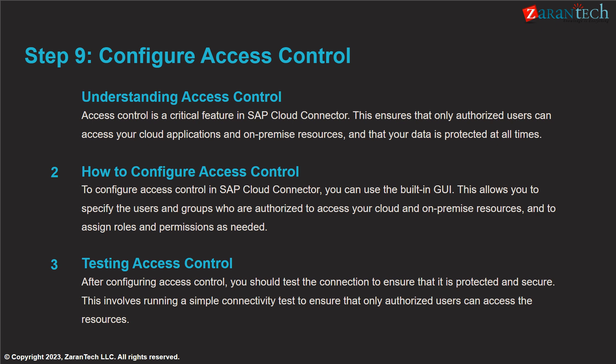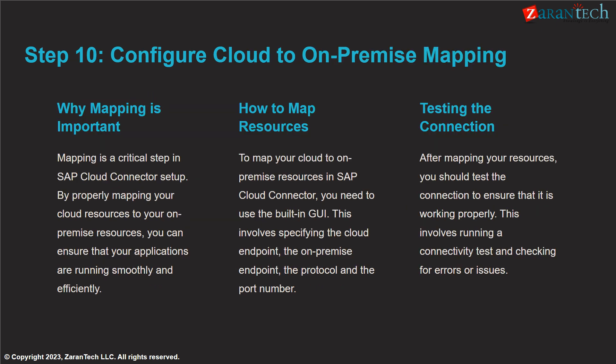Use the GUI to specify authorized users and assign roles and permissions. This ensures only approved users can access cloud and on-premise resources. Test access control by validating only authorized users can connect. Properly mapping cloud resources to on-premise endpoints optimizes performance. Use the GUI to map cloud and on-premise resources by specifying endpoints, protocols and ports. Test the connection to ensure proper mapping.